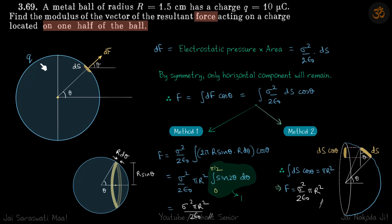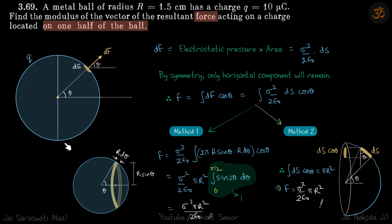We are given a metallic ball with a charge Q and we need to find the force acting on one half of the ball. Taking the right half of this conducting ball, we need to find the force experienced by this hemisphere. Our approach is to take a small element, find the small area on that element, and then integrate that force over the whole region to get the total force on the hemisphere.